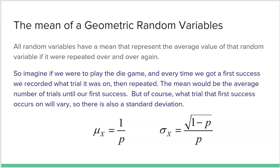Just because you expect the first success on a certain trial doesn't mean it can't happen earlier or later. There is also a standard deviation for the geometric distribution, with a slightly more complicated formula: the square root of (1 − P) divided by P, where 1 − P is your probability of failure.